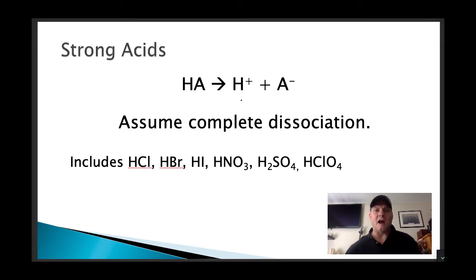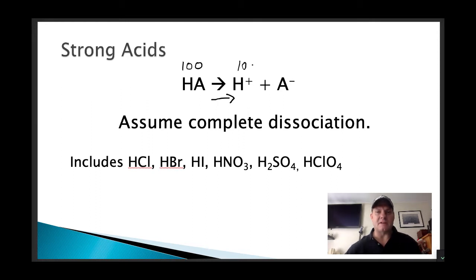Our strong acid solution shows complete dissociation — it's only one directional. So if I started with 100 HAs, I'm going to finish with 100 hydrogen ions. It's complete dissociation. The anion is just a spectator ion for our purposes right now.